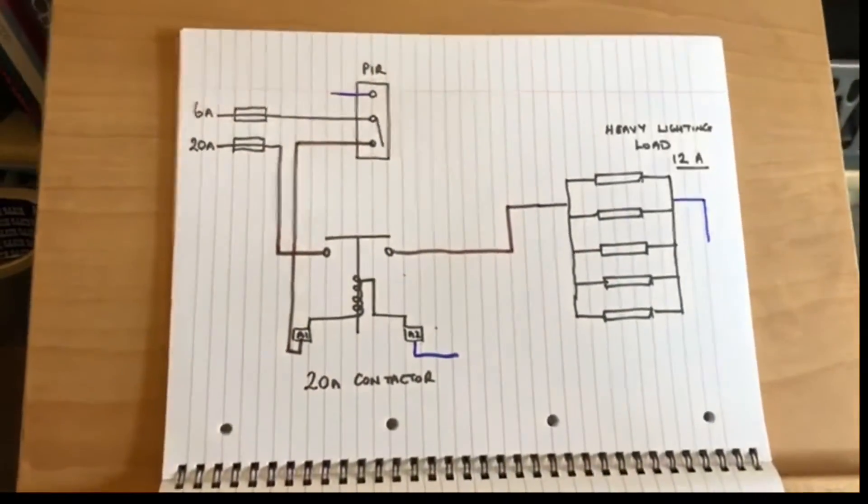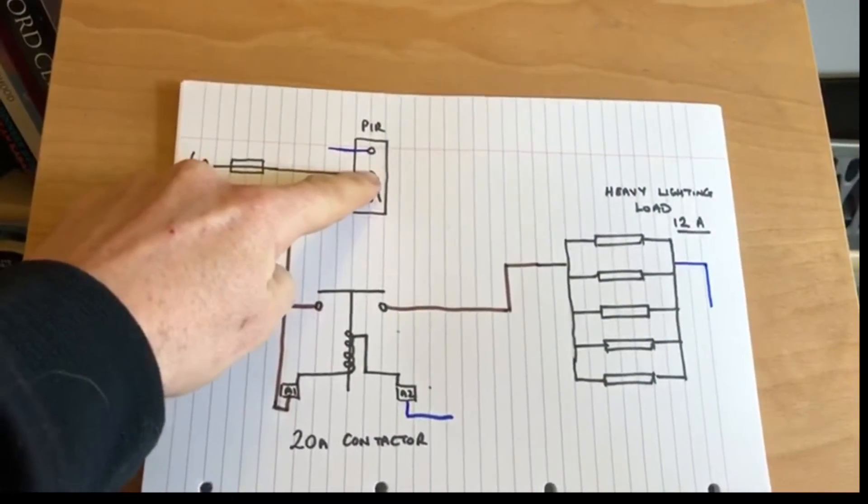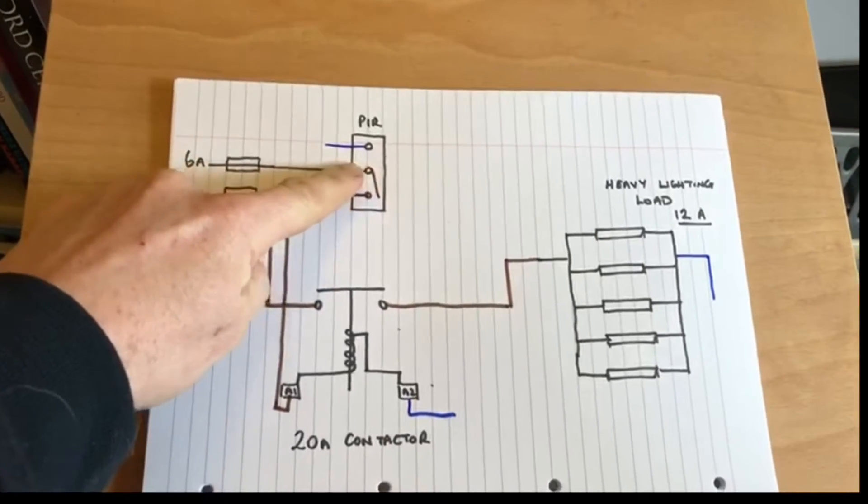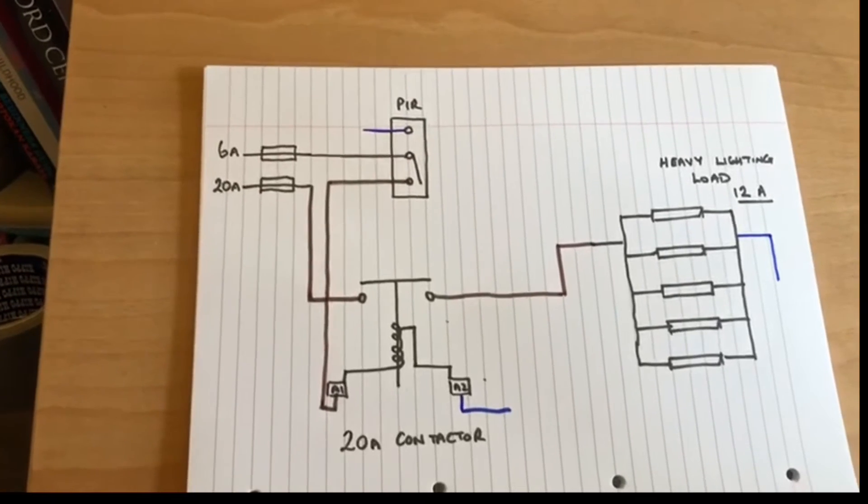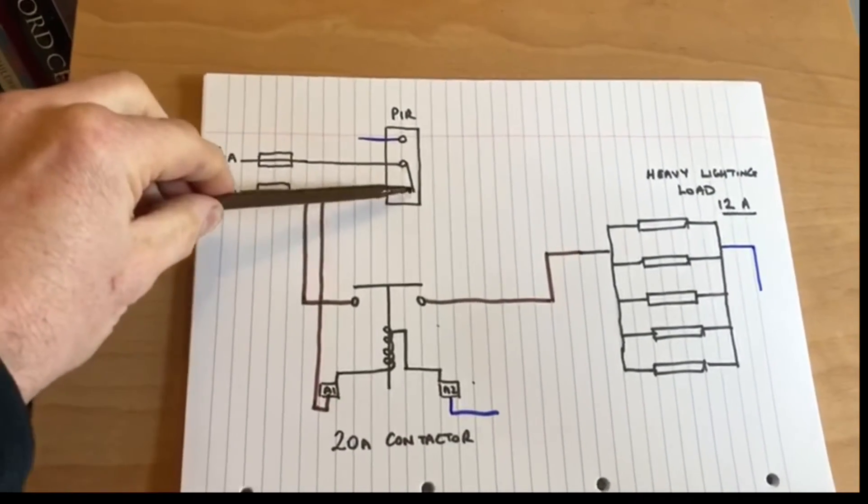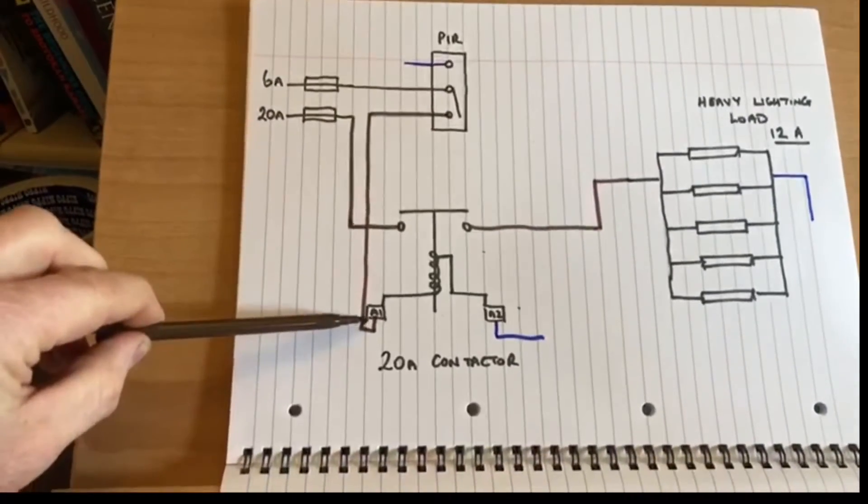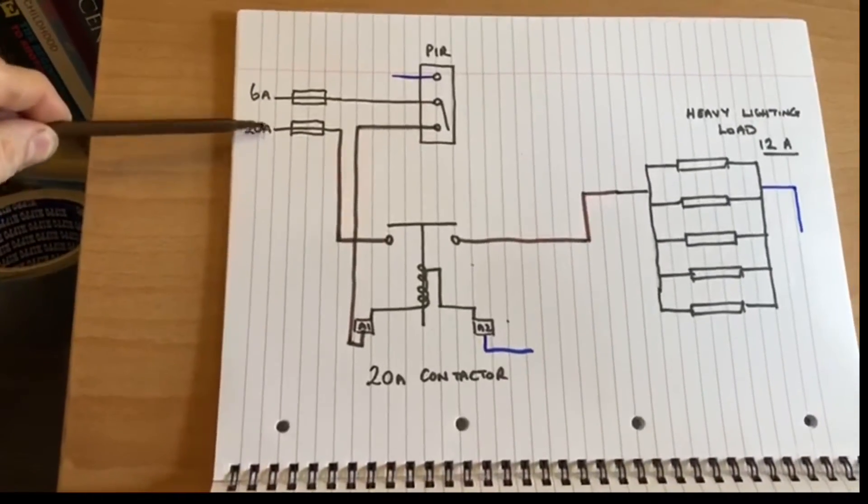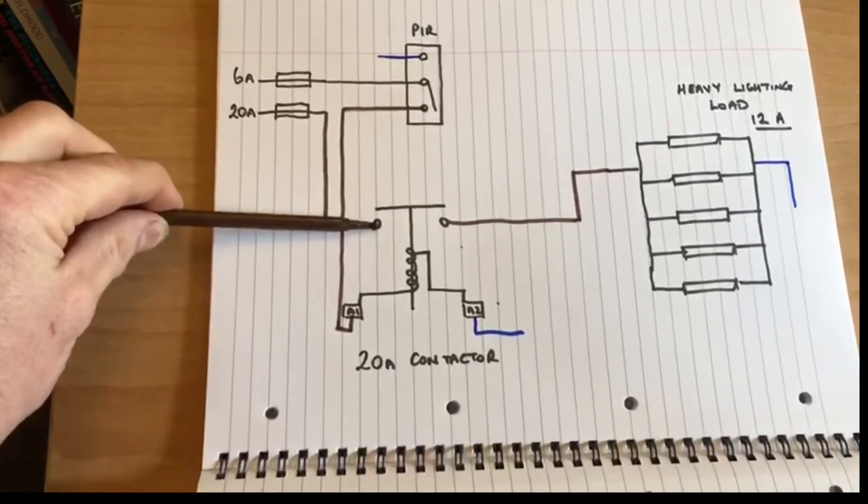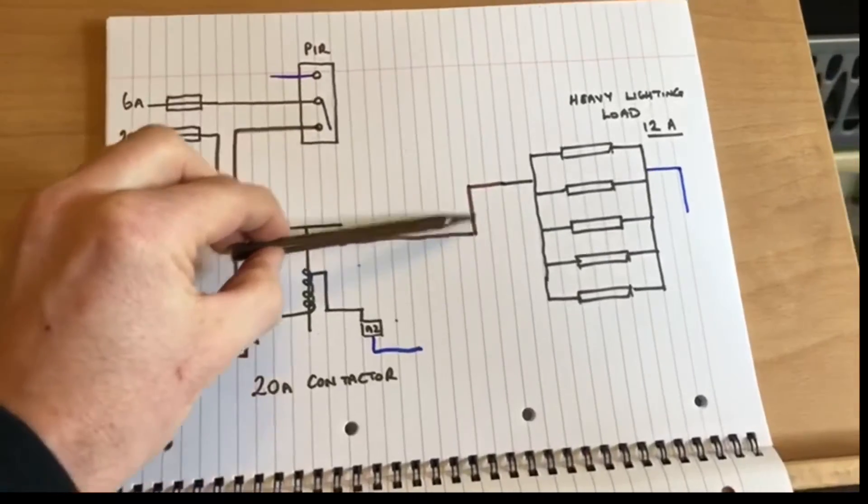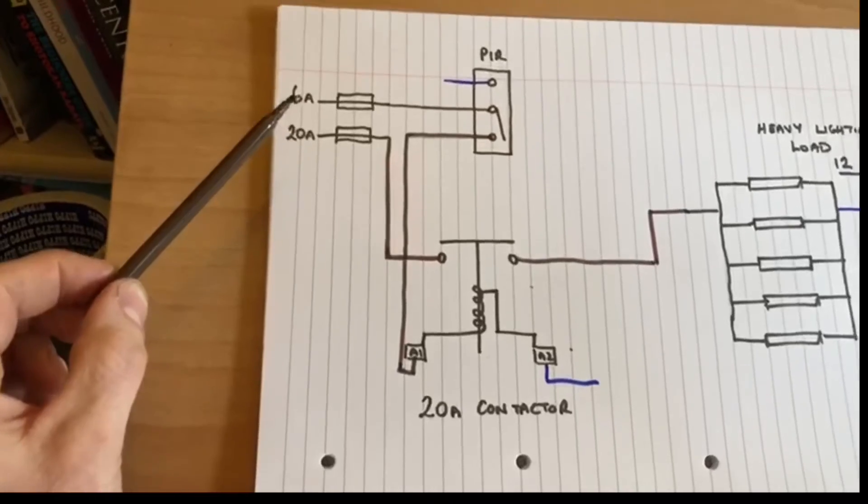So let's just run through how this is now going to work. We have our 6 amp feed coming through to the PIR, so again it's a permanent live position, a permanent live connection at the PIR. We then have from the switch outlet of the PIR that comes down to feed the coil. We then have our circuit breaker, a permanent live feed feeding the coil here and then feeding the bank of lights.